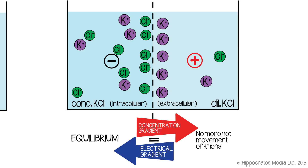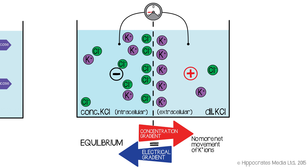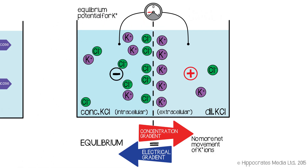At this equilibrium position we have a membrane with a potential difference across it — an electrical difference. The inside of the cell is negative, and the extracellular fluid outside is positive. In principle, you could put a voltmeter across the membrane and measure that potential difference as a voltage. You could calculate its value using an equation, but we won't go into that now. It's sufficient to say that if you have a membrane permeable only to potassium, and two different concentrations on each side, potassium will move until a voltage develops across the membrane. That voltage is called the equilibrium potential for potassium.